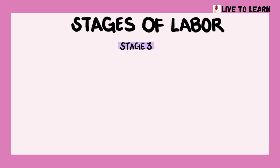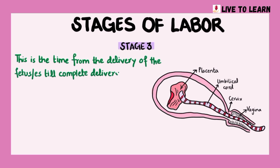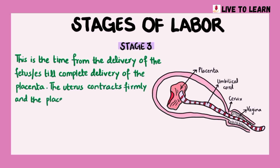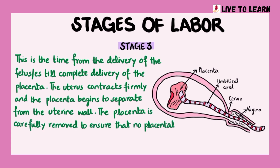Moving on to the third stage of labor, this is the time from the delivery of the fetus or fetuses until complete delivery of the placenta. The uterus contracts firmly and the placenta begins to separate from the uterine wall. The placenta is carefully removed to ensure that no placental remnants are left in the uterus.